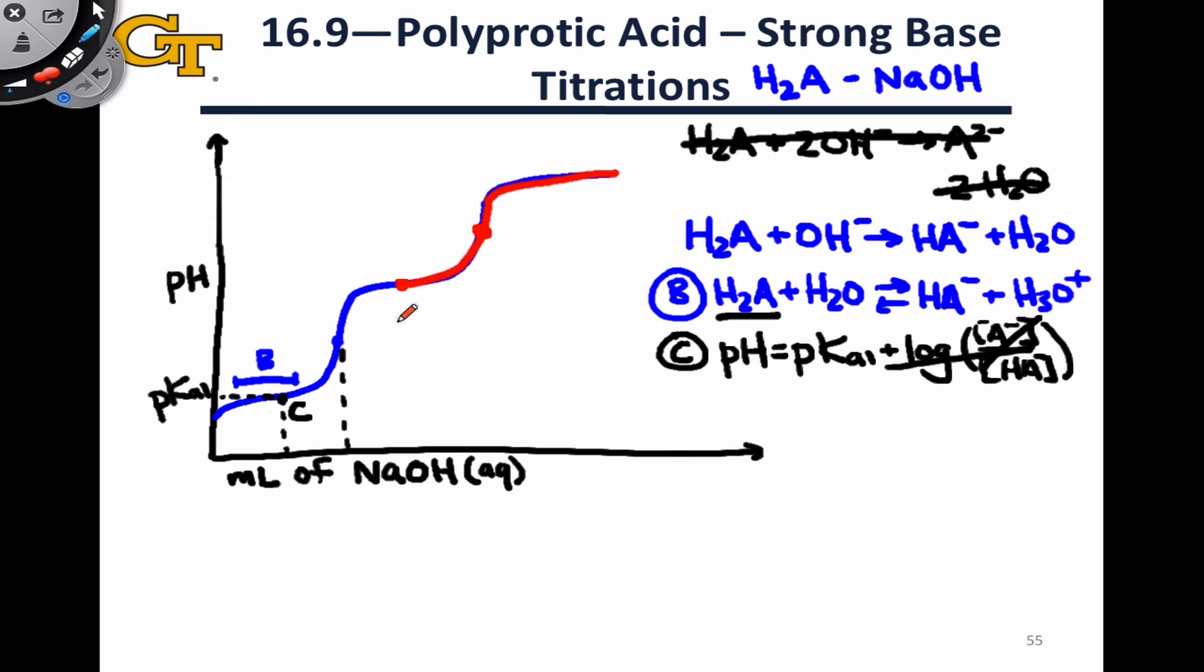Once we get to the point where the curve starts leveling off again, the first titration is essentially done, and so at this point, the concentration of H2A is basically 0. It's so small that it's negligible, and we can now transition from thinking about a titration of H2A that produces HA- as we add base in the blue section to a titration of the conjugate base now, HA-, which still has a proton left and can form A2- as additional base is added.